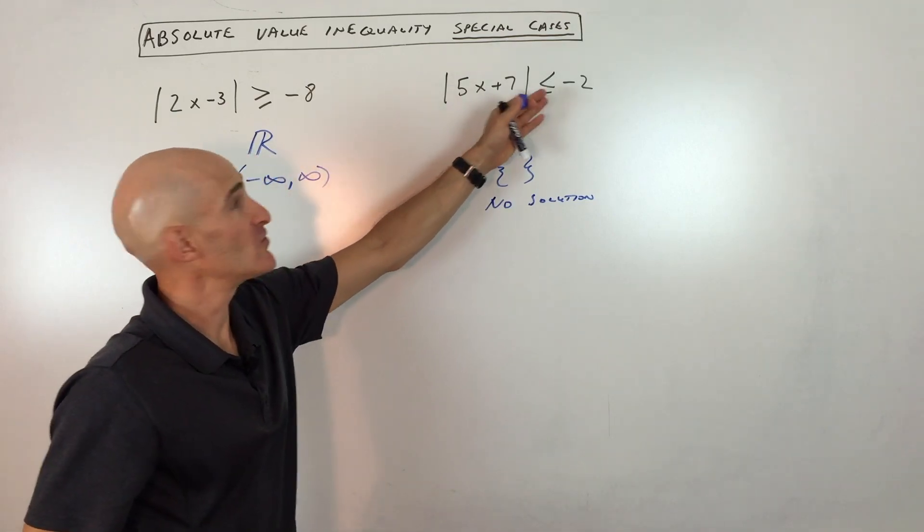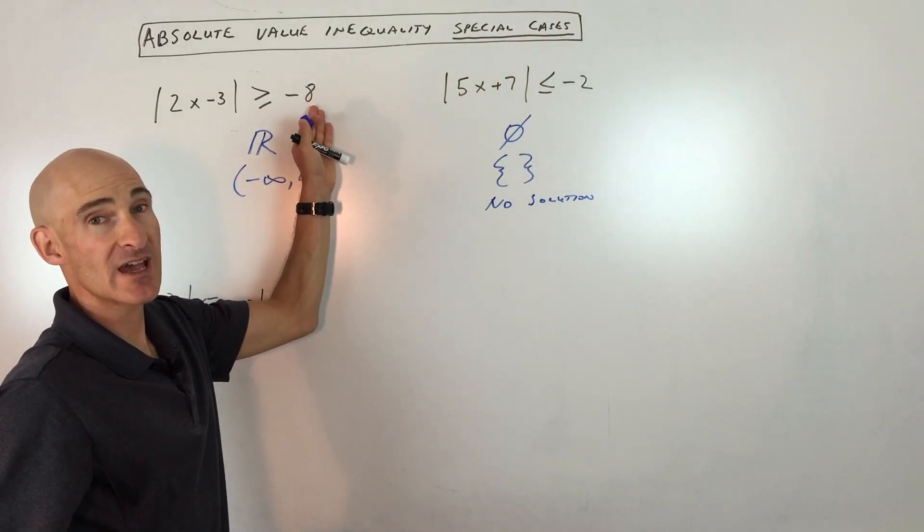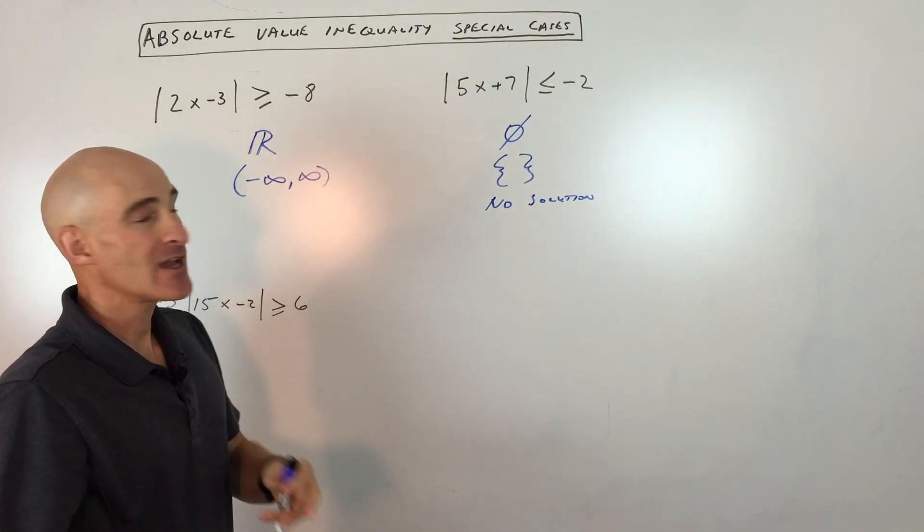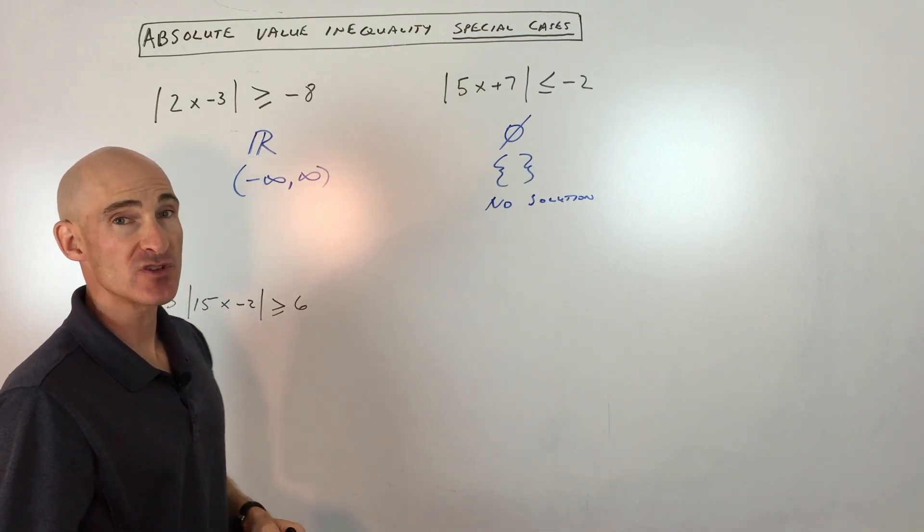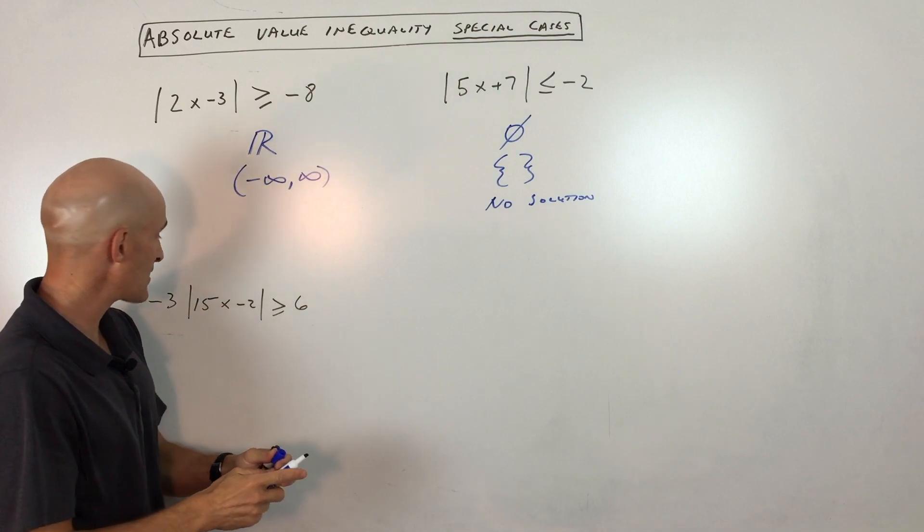So before you dive into these, if you see a negative number on the right side of the inequality, take a look and analyze it to see if it's no solution or if it's all real numbers. Now, the third case here that sometimes comes up is,